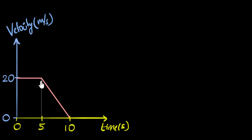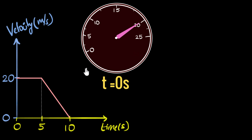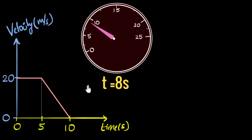But then notice what happens — the graph goes down, which means the speed decreases. If you were to go to somewhere like six seconds, go up and to the left, you can see that the speed is decreasing. The speed keeps decreasing until at 10 seconds, the speed goes to zero. So if we could look at that speedometer, at time zero it would be 20 meters per second, staying like that for the first five seconds, then decreasing until at the end of 10 seconds it goes to zero.